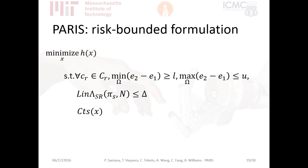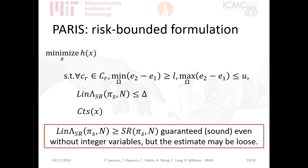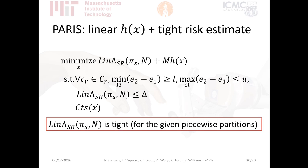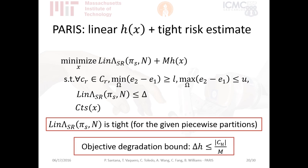You can also have other useful formulations: instead of minimizing risk, you could minimize some arbitrary linear objective while bounding risk to a given bound delta — a chance constraint. However, the solution may produce a very loose risk estimate. The paper provides another formulation that allows you to optimize some linear objective and also recover a tight estimate of the risk bound. By choosing the parameter M to be a thousand times the number of uncontrollable durations in your network, you are guaranteed to be precise up to the millisecond.